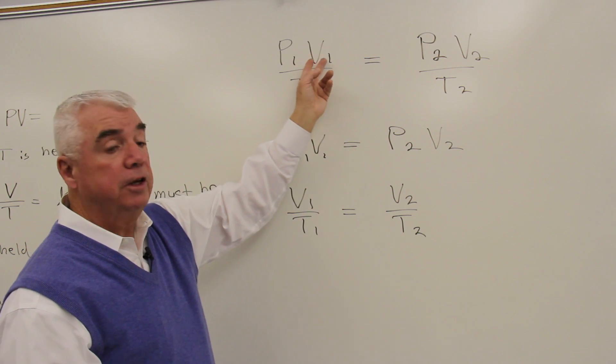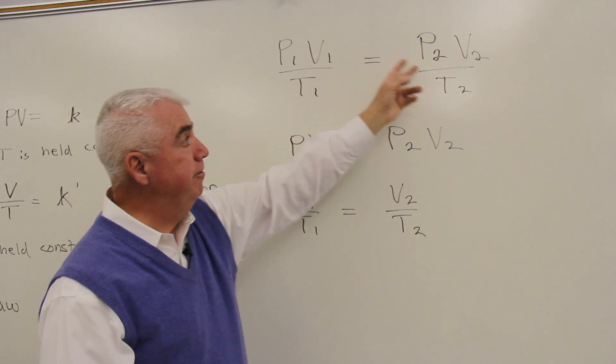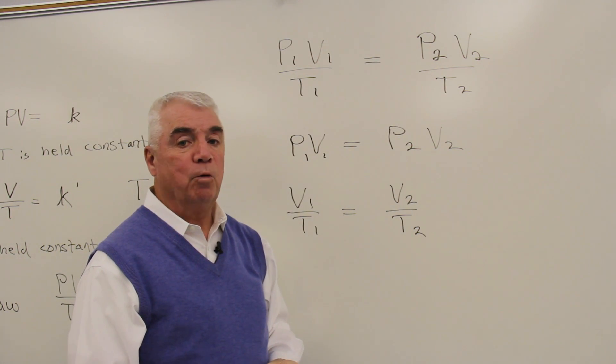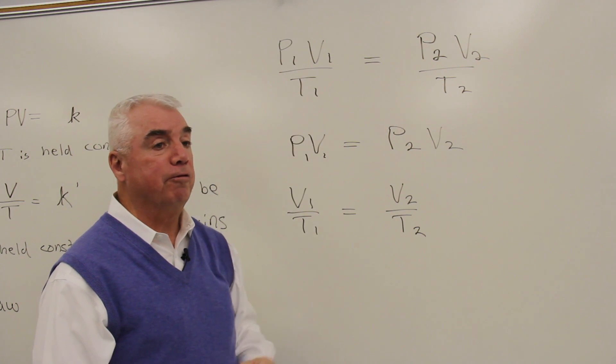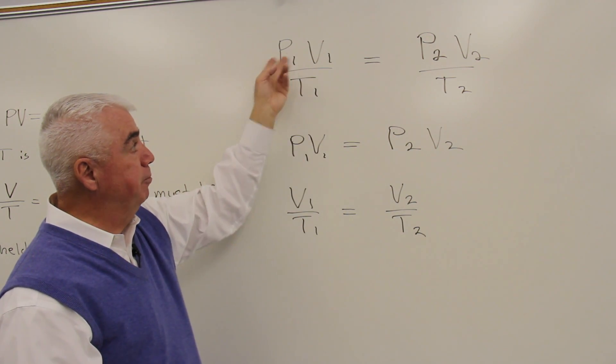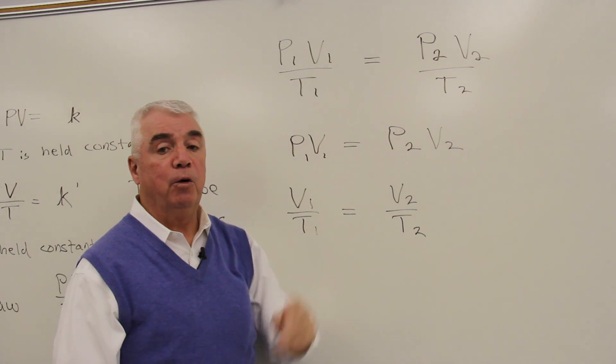and work at constant volume, and V1 and V2 would be equal in that case and would cancel from the equation. We'd have P over T equals P over T.